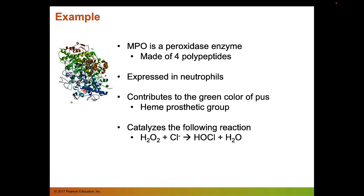During an infection, neutrophils arrive at the site of infection, fighting the pathogen, but a lot of them die. When they die, they burst open and release their MPO. So if you have a lot of dead neutrophils, you have green pus. MPO also catalyzes a very cool chemical reaction: it takes hydrogen peroxide and a chloride ion and turns it into HOCl and water. HOCl, or hypochlorous acid, is actually the active component in bleach — a really powerful antimicrobial made inside your cells that's capable of killing pathogens.